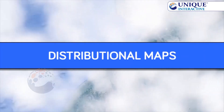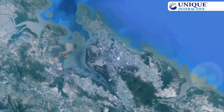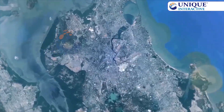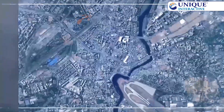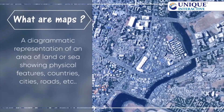Distributional Maps. What are Maps? Maps are a diagrammatic representation of an area of land or sea showing physical features, countries, cities, roads, etc.